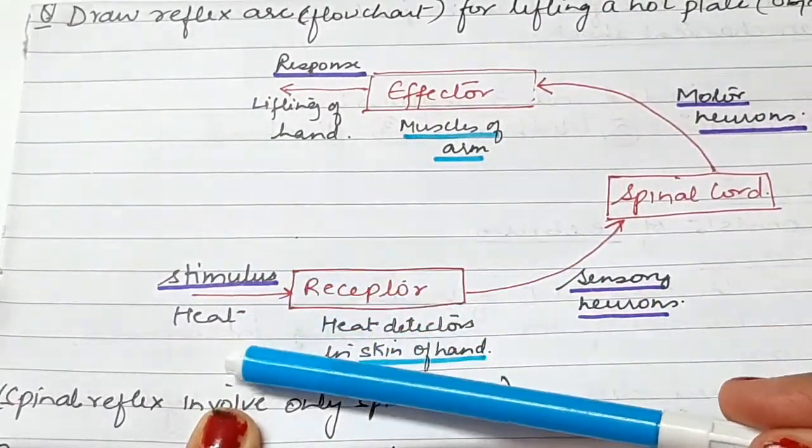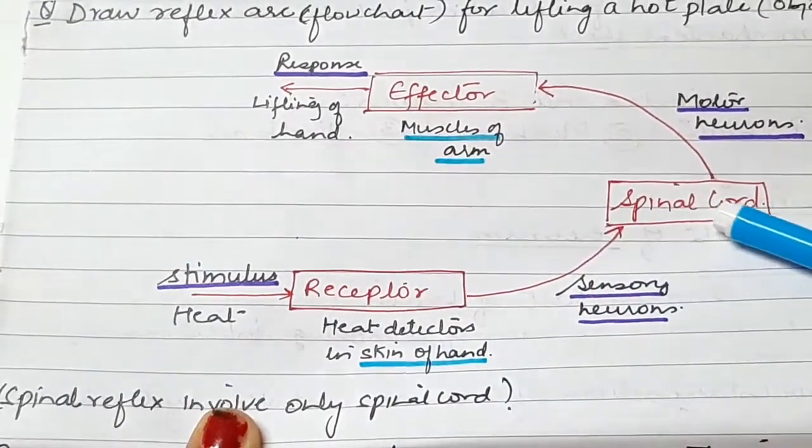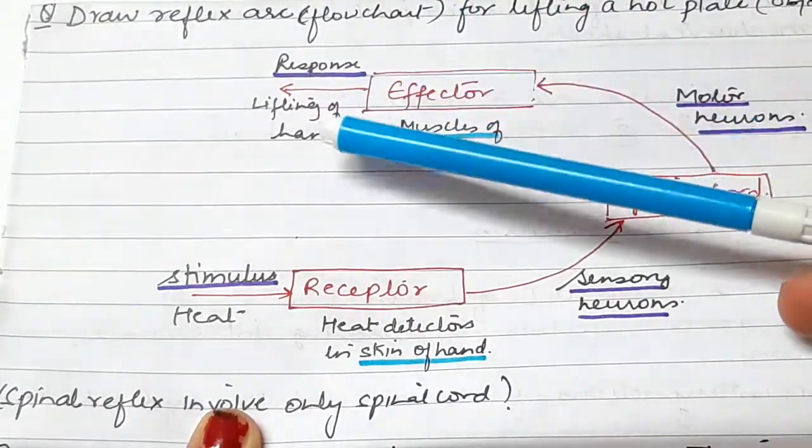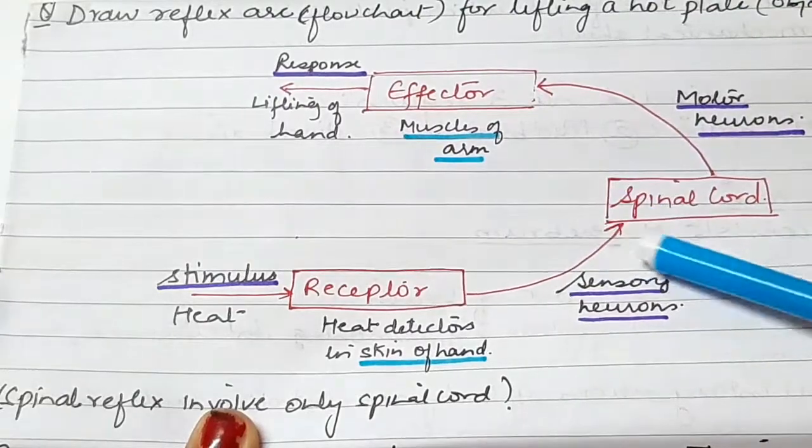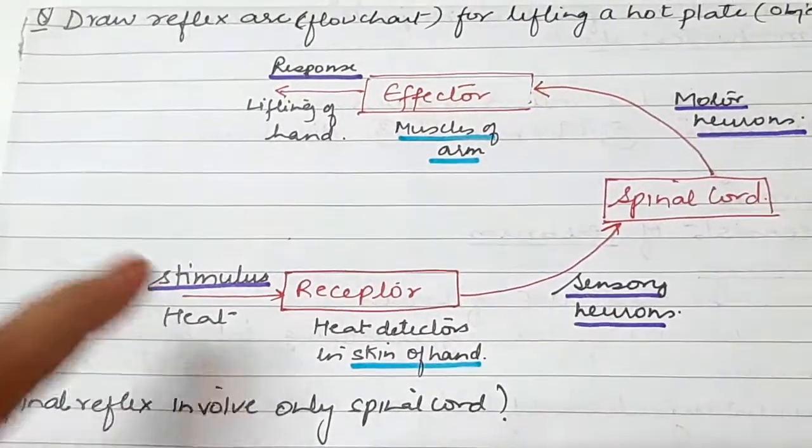So this is a flowchart representation. The stimulus was heat, the receptor was skin. Through the sensory neuron the message travels to the spinal cord, and then through the motor neuron it reaches the effector. The response was that we lifted our hand. So these all come under the spinal reflex arc. When the spinal cord is involved, it is the spinal reflex arc.